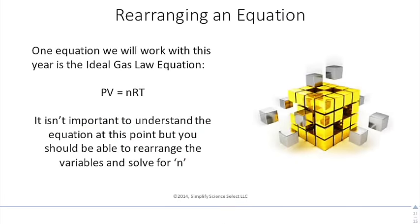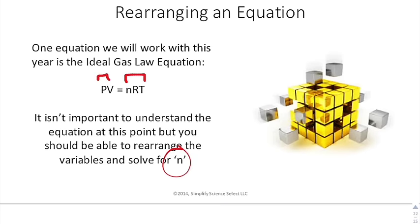When you rearrange an equation, a lot of times you're working with variables that you may not necessarily know what they are. So you have like PV equals NRT. This equation you don't really know anything about, but you should be able to rearrange it for N. If you look, P and V are multiplied, NRT are multiplied, but they're on opposite sides of the equation.